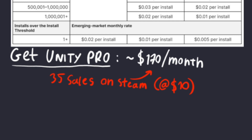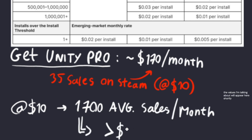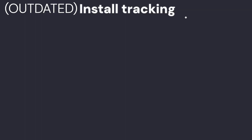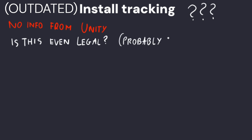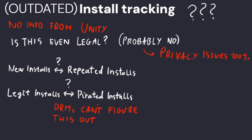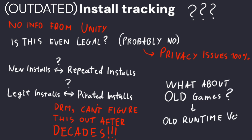Getting Unity Pro is only worth it if your game gets fees higher than $170 a month, which would be around 700 new installs a month, assuming revenue over $20,000 a year. If your game costs $10, it requires around 1,700 copies sold per month to hit the threshold, so at that revenue level Unity Pro is somewhat required. I don't really want to get into how Unity would actually track new installs because they refuse to give out any information, but many people including myself don't see a way to track these legally without running into privacy issues — not to mention distinguishing new installs from repeated or pirated installs. If they can't do that, it could create a major botting issue. And how would old games on older runtime versions even report this information without updating? Yeah, I have no idea.